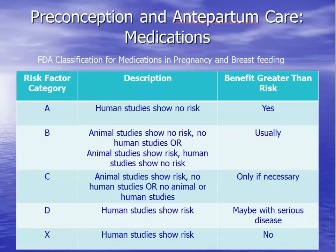The FDA classifies medications in different risk categories based on available human or animal studies. You should be familiar with the different categories and prescribe only categories A and B if possible. Recognize that many medications are classified as risk category C by default because we do not have safety data for pregnancy.